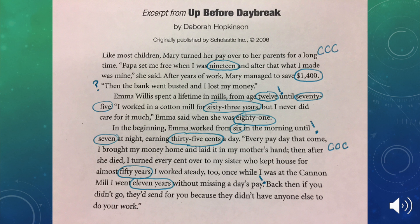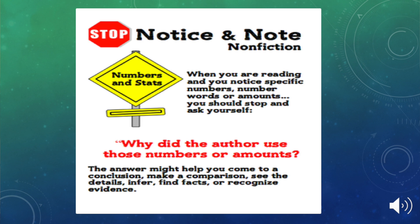For instance, this text is about a young girl who was working in the mills from the age of 12 until she was 75 — that was something that really surprised me. When I went back to look at the numbers themselves, I realized that was 63 years, and it also dug deeper on the amount of money she was making for all those hours and years she spent working. So it really helped me closely read the text and focus specifically on the significance of those numbers. Numbers and Stats is a great strategy to add to your toolkit as both a during-reading strategy and a post-reading strategy to discuss why the author used those numbers or amounts.